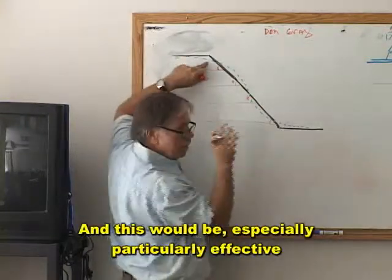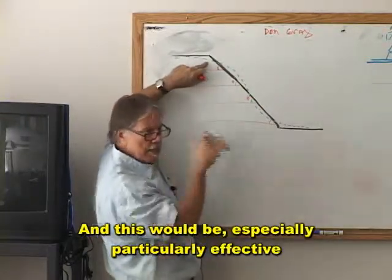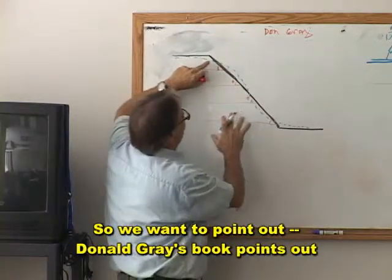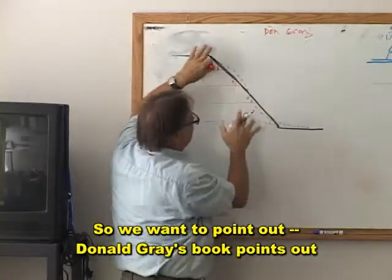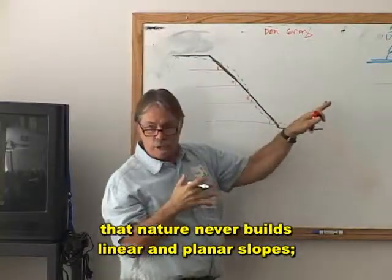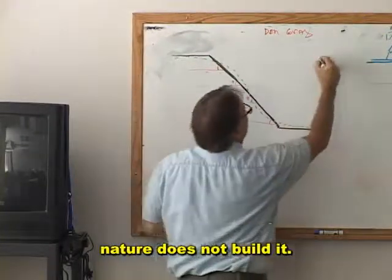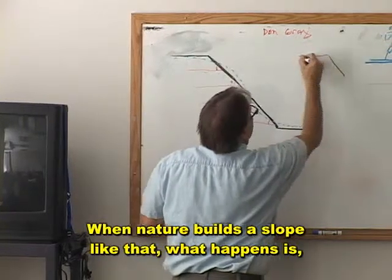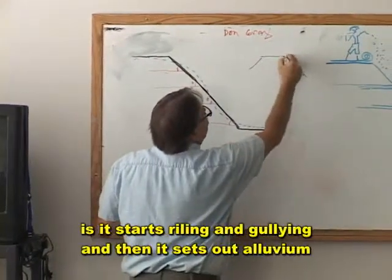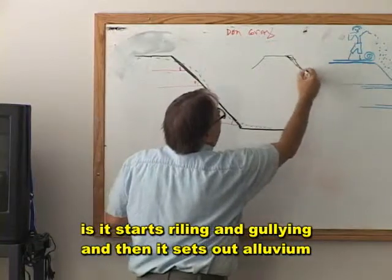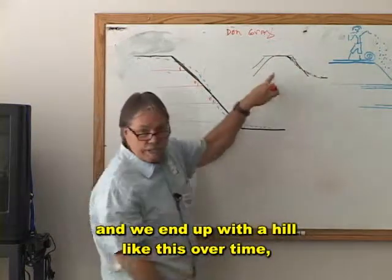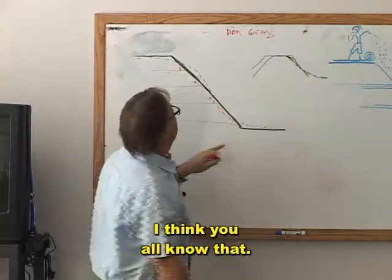This would be especially effective up in the decomposed granites. Donald Gray's book points out that nature never builds linear and planar slopes — nature does not build them. When nature builds a slope like that, what happens is it starts rilling and gullying, then it sets out alluvium, and we end up with a hill like this over time.